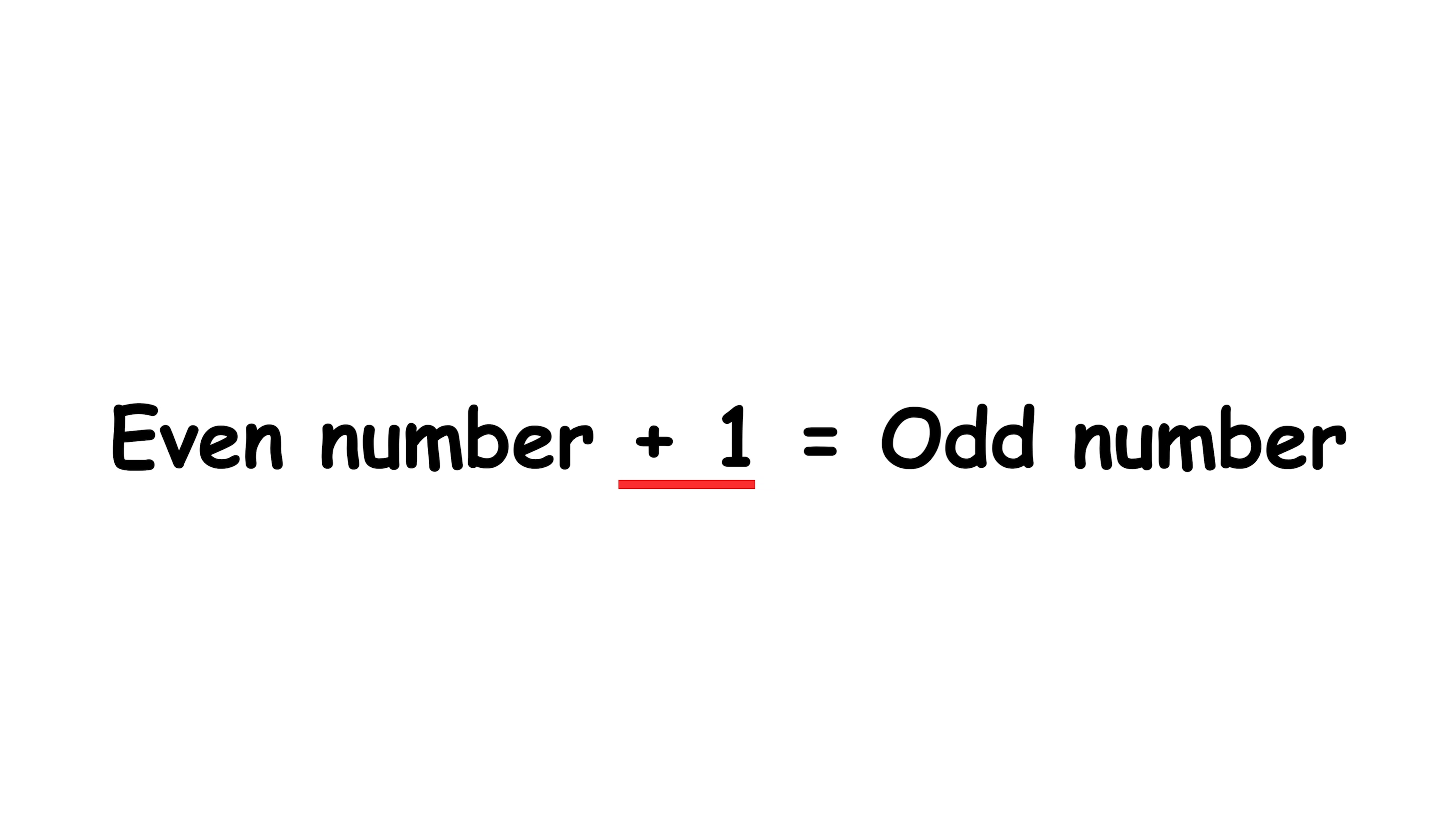Returning to the proof, remember that a squared equals 2b squared. Of course, b squared is a square number, so the prime factor 2 must appear an even number of times in its prime factorization. When we multiply that by another factor of 2 to get 2b squared, an even number plus 1 is an odd number. So we must have an odd number of factors of 2 in 2b squared.